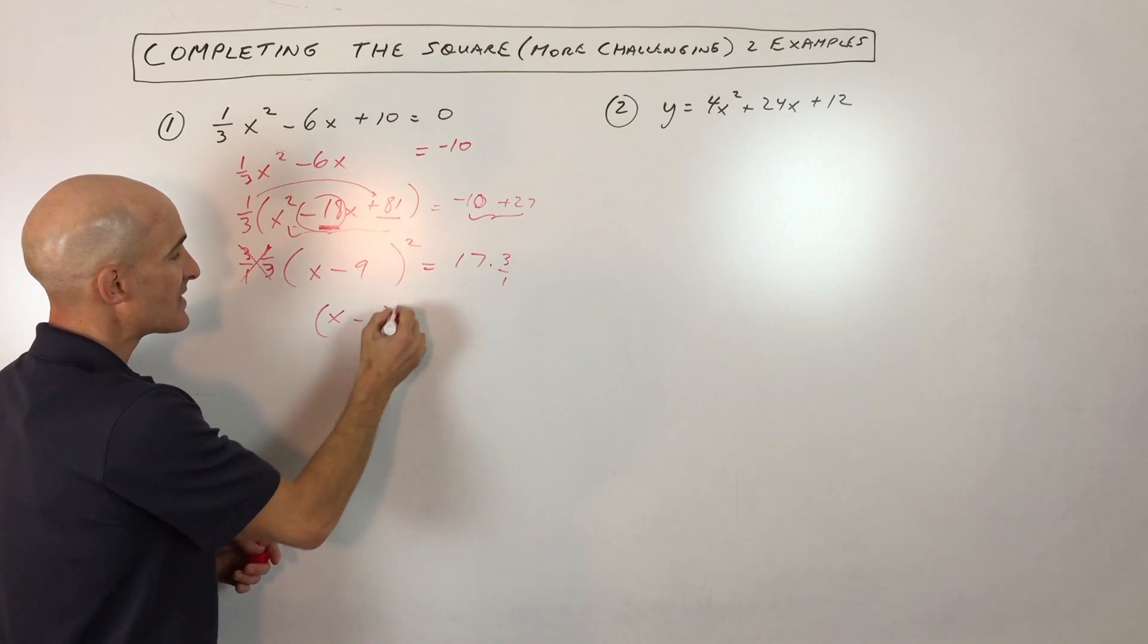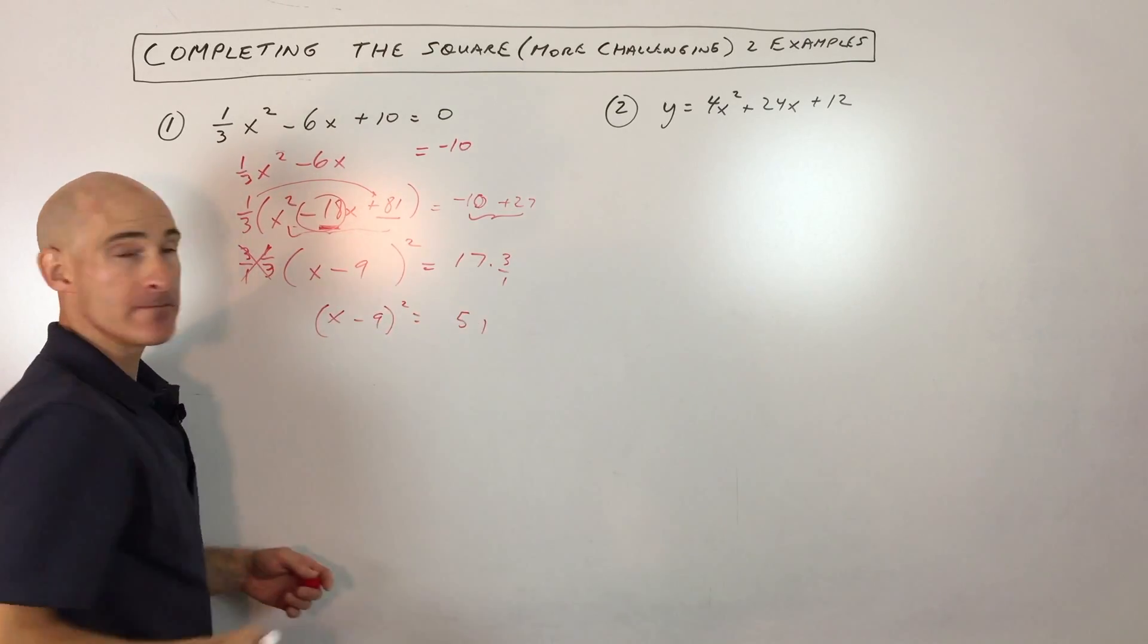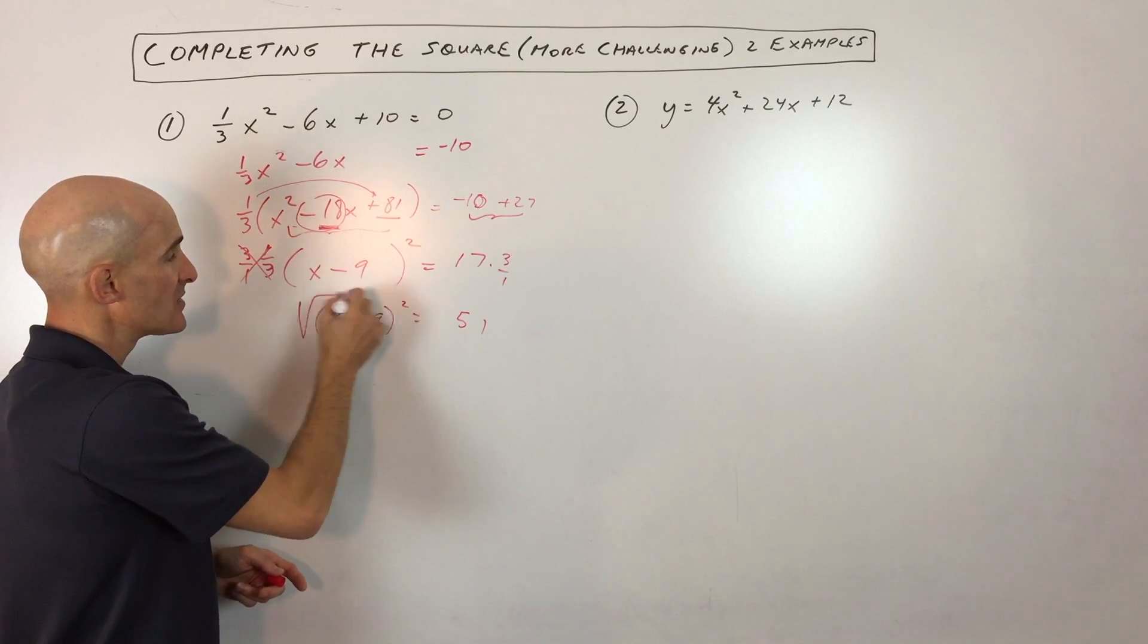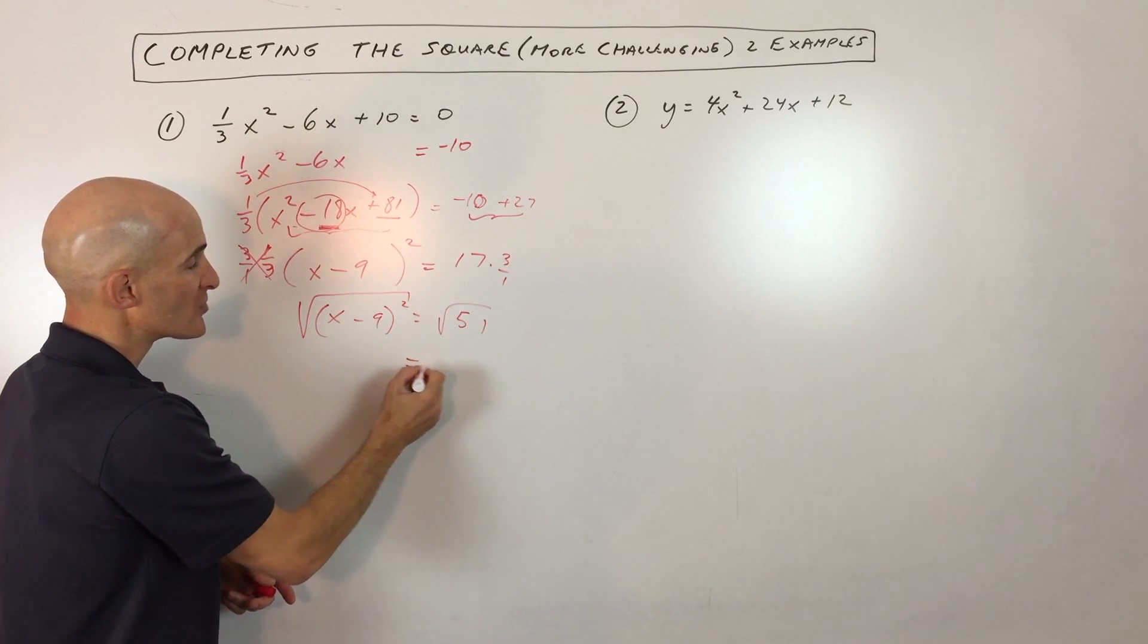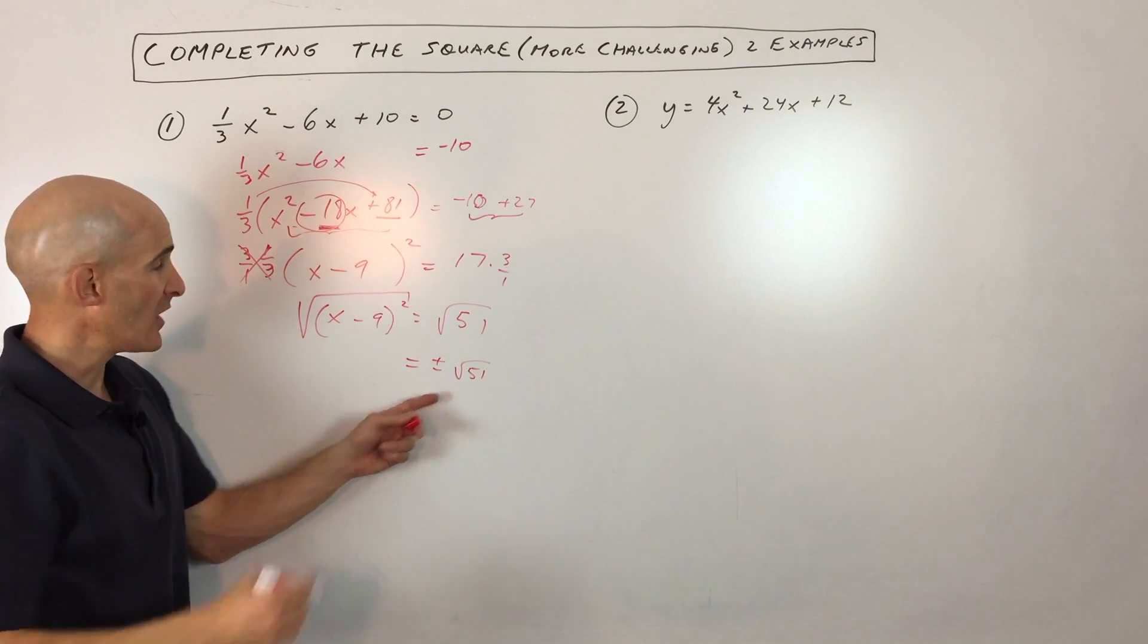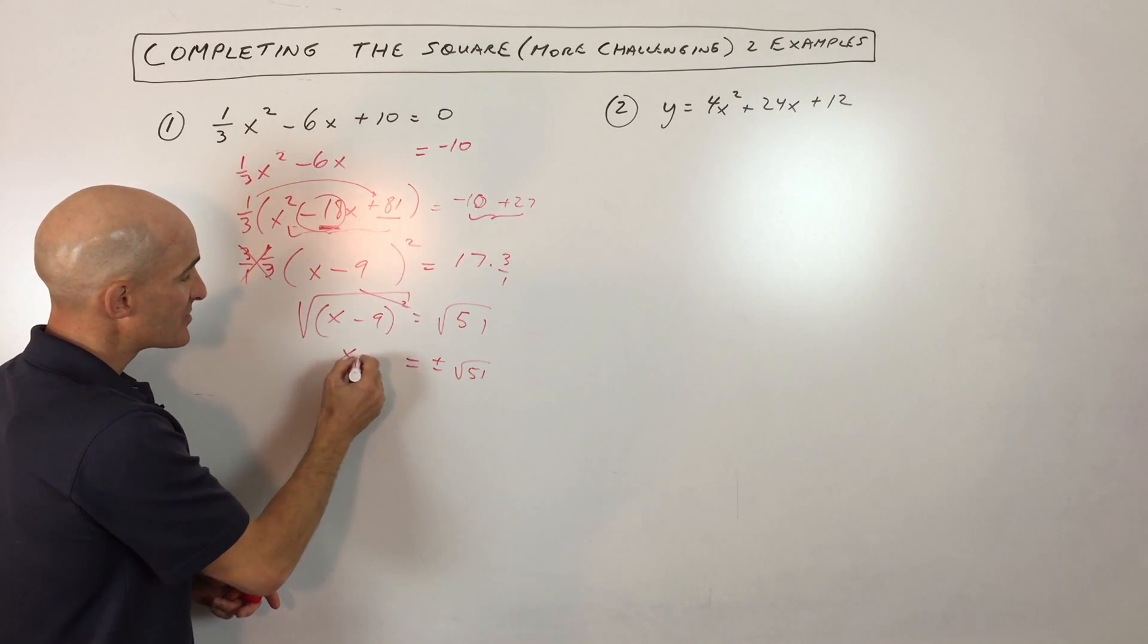So now we're left with x minus 9 squared equals 51. And we're still working from the outside in towards the x. So the opposite of squaring is to take the square root of both sides. Now remember when you do that, you get two answers, plus or minus. The square and the square root here are canceling one another out.